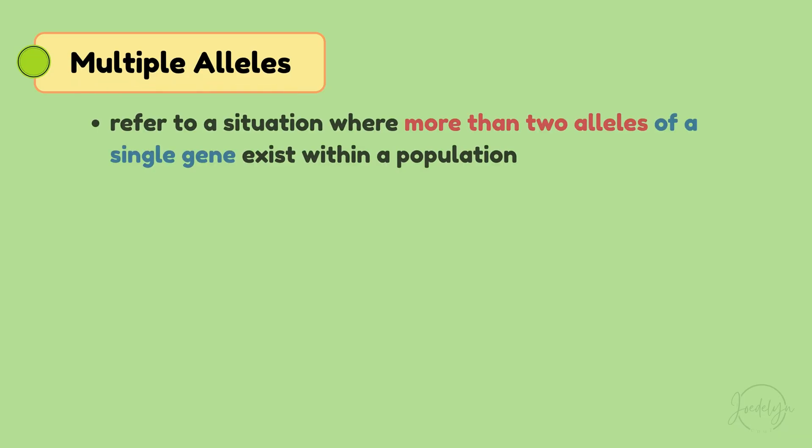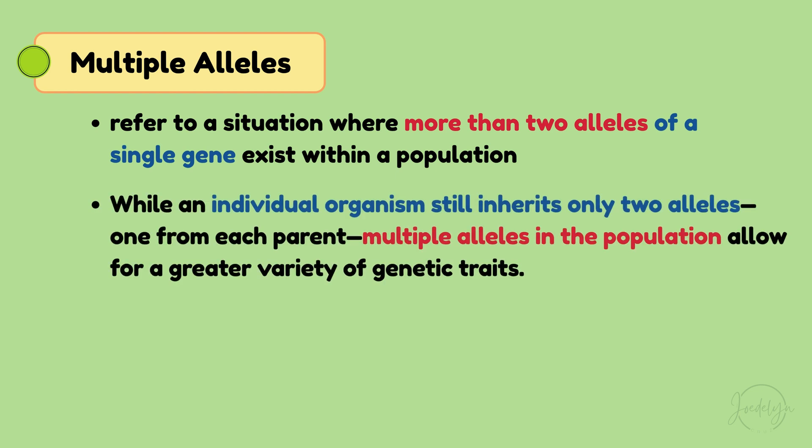Multiple alleles refers to a situation where more than two alleles of a single gene exist within a population. While an individual organism still inherits only two alleles — one from each parent — multiple alleles in the population allow for a greater variety of genetic traits.